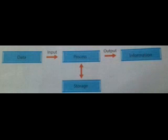We enter data and instructions into the computer using a keyboard and a mouse. The computer then processes the data according to the given instructions and gives us the desired result. Let us see how a computer does this. A computer works on the input, process, and output cycle — in short, the IPO cycle.